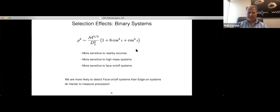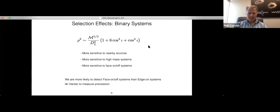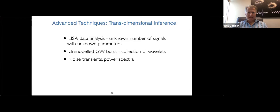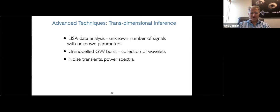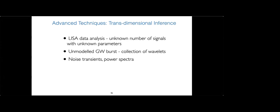We'll take a short break, then move on to more advanced techniques including trans-dimensional inference, used in LISA data analysis and also for detecting unknown signals in LIGO-Virgo, modeling noise transients, and modeling overall power spectra.